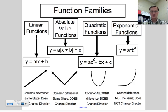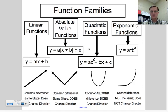Linear functions: y equals mx plus b, where m is the slope and b is the y-intercept. Absolute value functions: y equals a times the absolute value of x plus b, then plus c. Quadratic functions: y equals ax squared plus bx plus c. And exponential functions: y equals a times b to the x power.